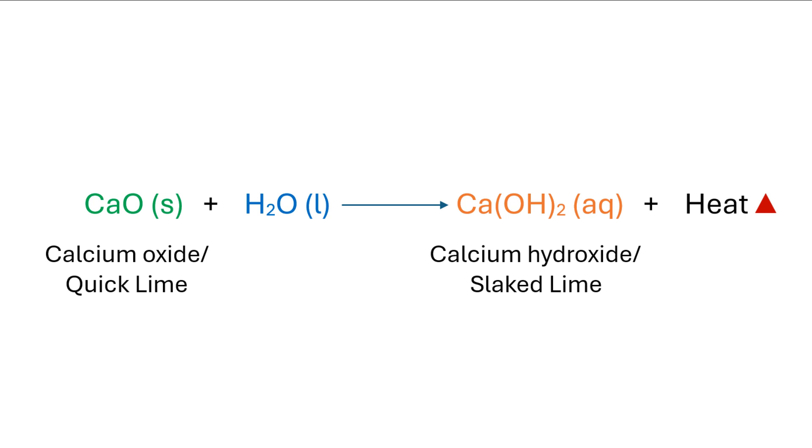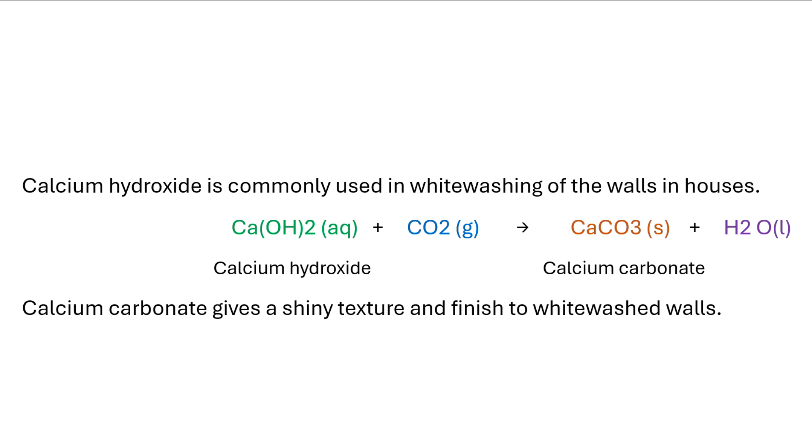Calcium hydroxide is commonly used in whitewashing of walls in houses. In fact, the major component of water-based distemper paints is calcium hydroxide or slaked lime.